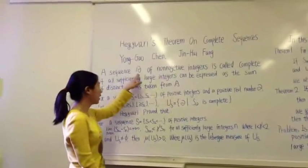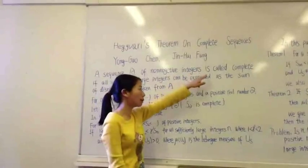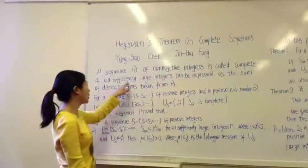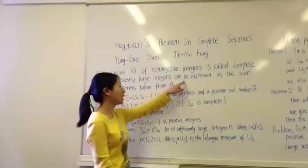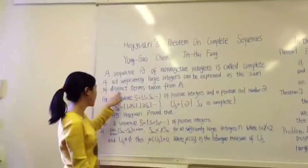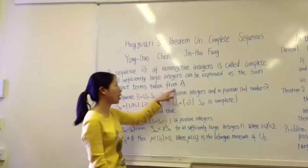A sequence A of non-negative integers is called complete if all sufficiently large integers can be expressed as the sum of distinct terms taken from A.